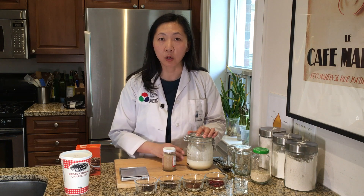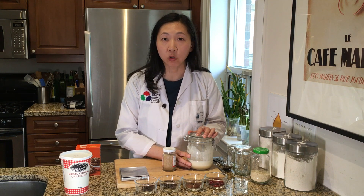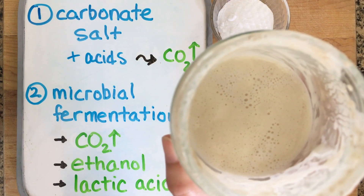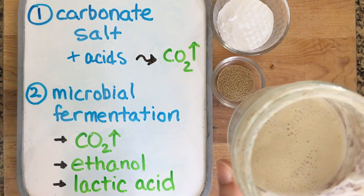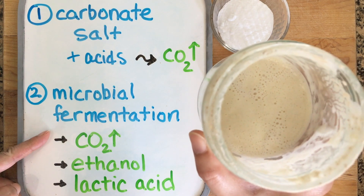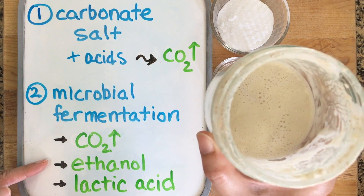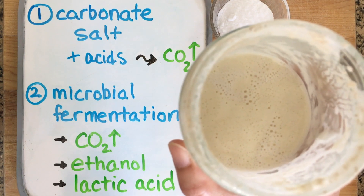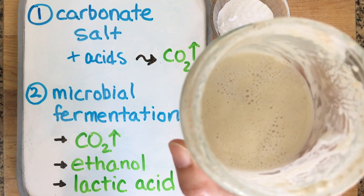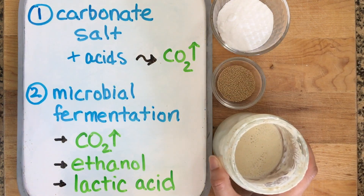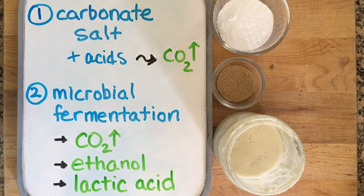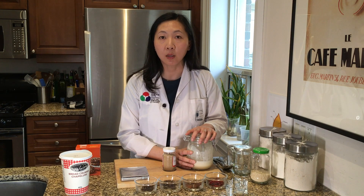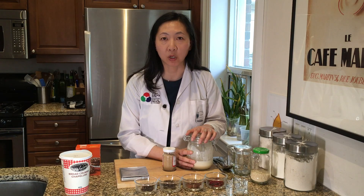Sourdough starter is a stable culture of naturally occurring yeast and bacteria. The yeast, in the first stage of fermentation, generate carbon dioxide gas which gives us the leavening effect. We eventually start to generate ethanol as a byproduct — that ethanol is a simple alcohol and it evaporates during the baking process. Bacteria generate lactic acid as a byproduct of their fermentation process, and that lactic acid gives us the characteristic sour taste of sourdough.